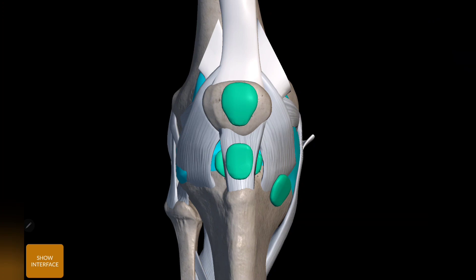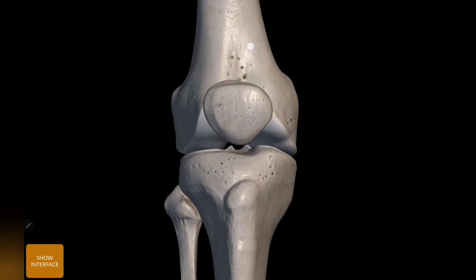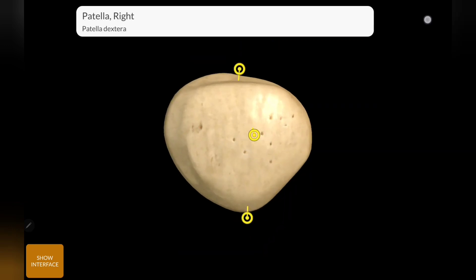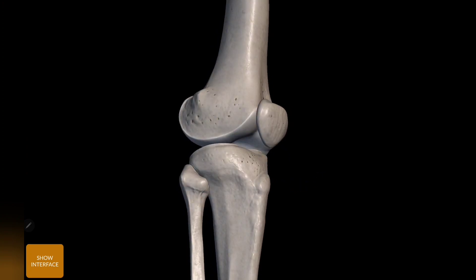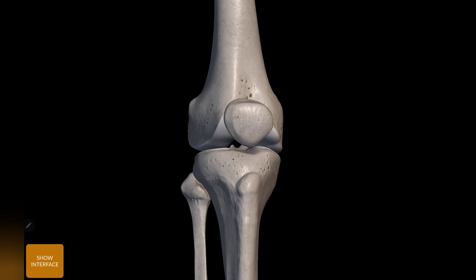First of all, what are the bones forming the knee joint? There are three bones: the femur, the tibia, and the patella. The fibula is not a part of the knee joint. The three bones are the femur, the tibia, and the patella.